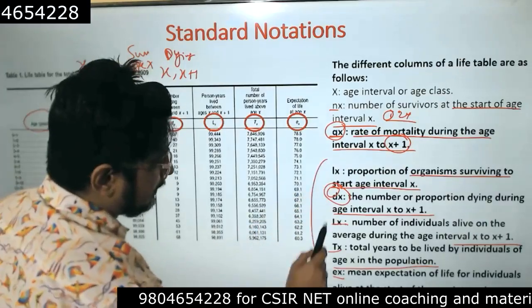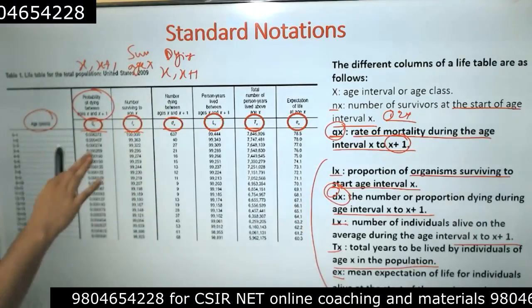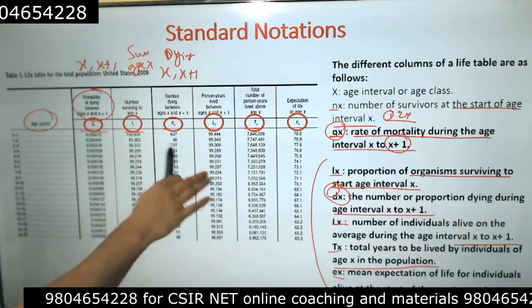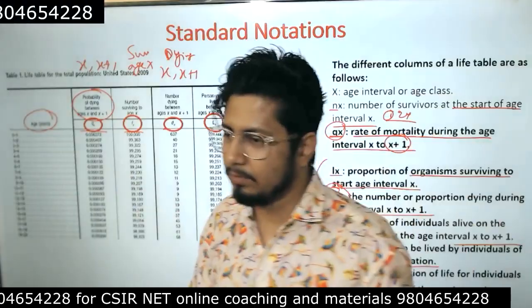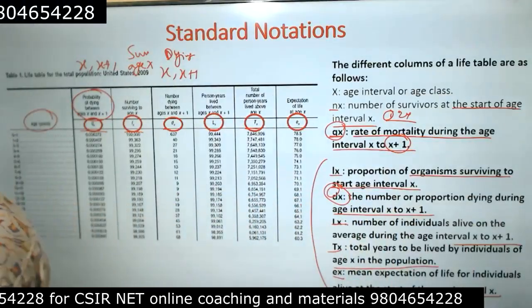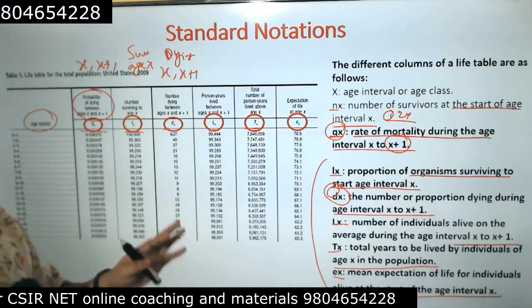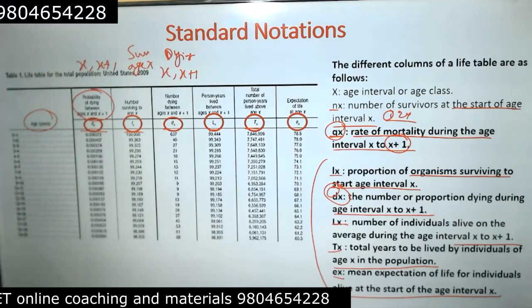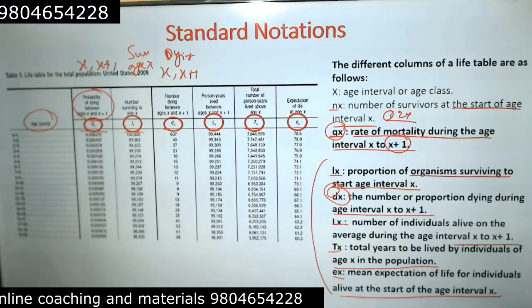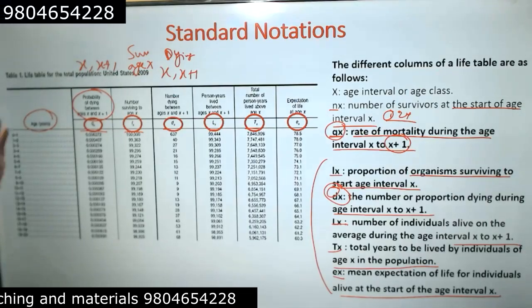So Lx, Dx, Tx, and Ex are the key variables needed, and based on those there are formulas. The table will be provided to you and you just need to calculate the values. Earlier, CSIR exam questions were asked from this table more often, but for the last 2–3 years they are not asking as much because in CBT mode these tables are not easily visible on the same screen. That's why they changed the questions. But now you understand the components of a life table.